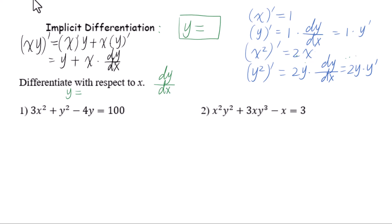Let's go to number 1. We take the implicit derivative of both sides of the equation, so we have 6x plus 2y times dy by dx minus 4 times dy by dx equals 0.